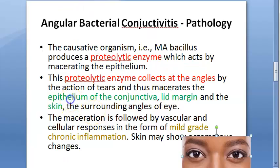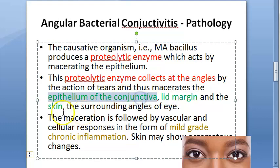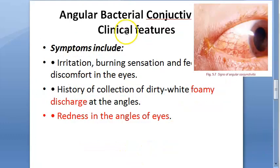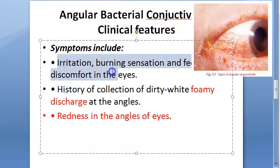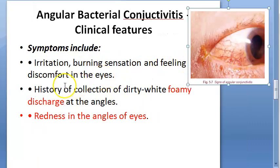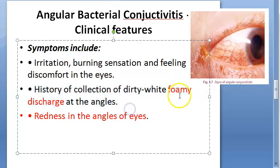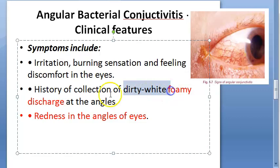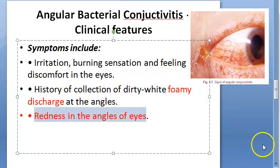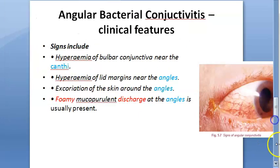The epithelium of the conjunctiva, lid margin, and skin are all affected, with mild-grade chronic inflammation. Clinically, the patient will complain of irritation, burning sensation, and discomfort. There will also be a foamy, dirty-white colored discharge, and the angles of the eye will appear red.